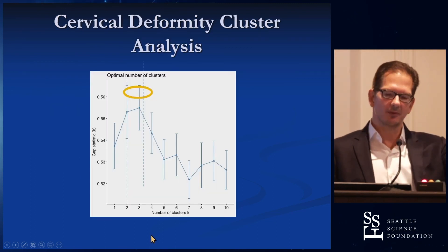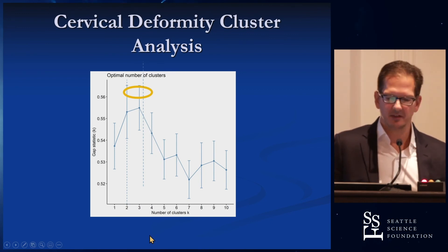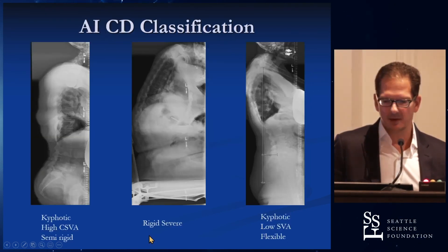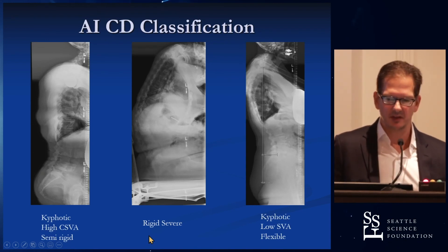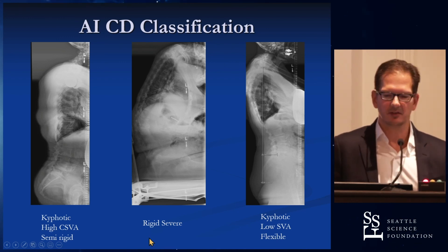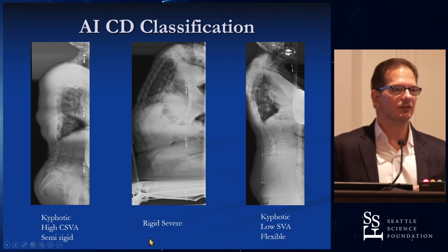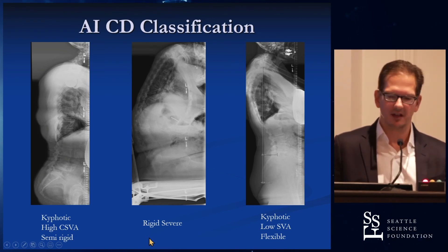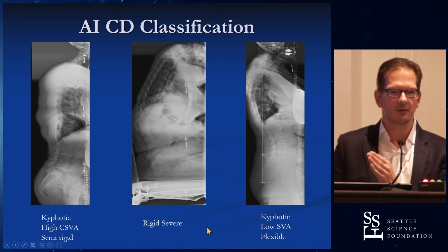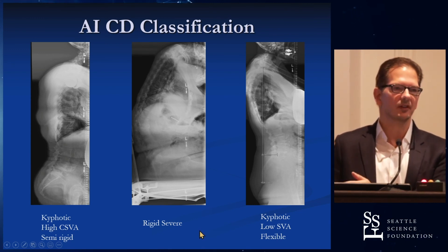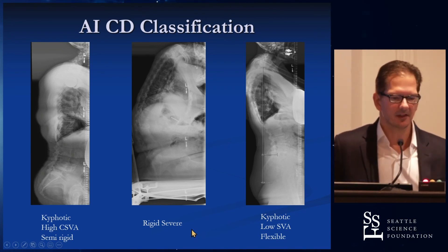To bring you up to the latest: we're now using AI-based clustering in our database, and the computer has identified three different subtypes from the North American prospective cervical deformity database. You have the flat neck patient on the left with cervical sagittal imbalance — we're presenting to the SRS this year that these patients do best with anterior-posterior surgery. In the middle are patients needing three-column osteotomies. On the right are the more flexible patients with cervical kyphosis — last year we won the NASS Value Award for a paper showing this morphotype does best with anterior surgery alone. Thank you very much.